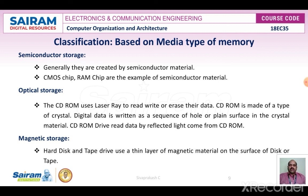For magnetic storage, a hard disk or tape drive uses a thin layer of magnetic material on the surface of a disk or tape. By using this method, information is stored on the magnetic storage medium.